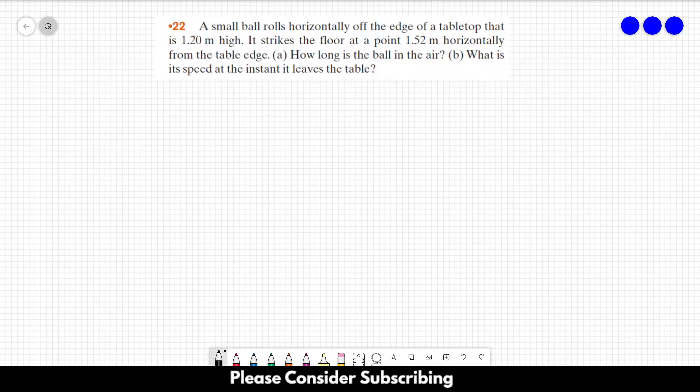Number 22. A small ball rolls horizontally off the edge of a tabletop that is 1.2 meters high. It strikes the floor at a point 1.52 meters horizontally from the table edge. Letter A: How long is the ball in the air? Letter B: What is its speed at the instant it leaves the table?